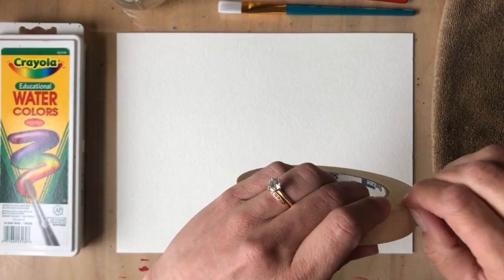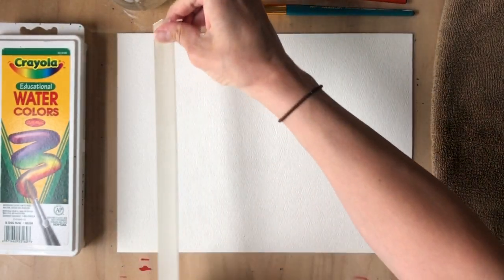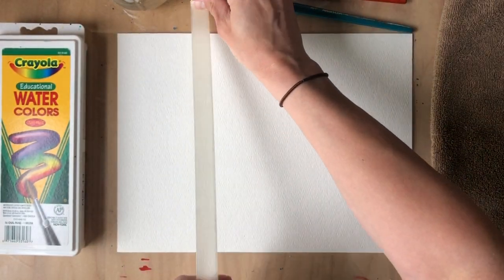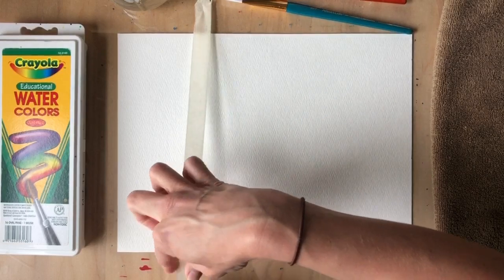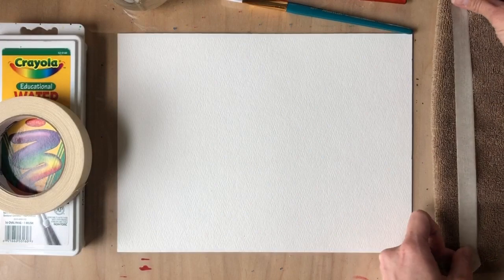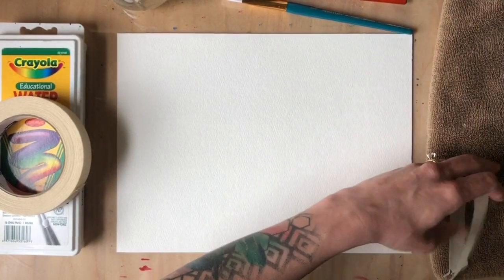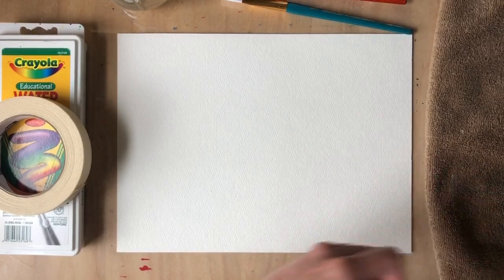The way we do that: measure the length of your page, you can even stick it down to a surface, rip, and before I just put it right on my paper, I'm gonna stick it to my towel and pull it up. This takes away a little bit of the stickiness so my paper is not at risk of ripping later on.